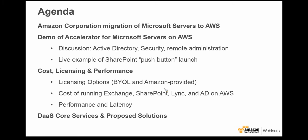Our agenda is: first, a case study on the Amazon corporate migration of Microsoft servers to AWS. I want to do several demonstrations — running Windows and Microsoft Office products on AWS, including a live example of Exchange, SharePoint, Lync, and Active Directory all running in a single Virtual Private Cloud. I'll also talk about cost, licensing, performance, and desktop as a service.